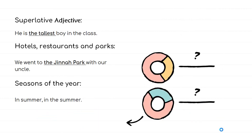When talking about the superlative degree of an adjective, we use the definite article — for example, 'He is the tallest boy in the class,' where 'tallest' is a superlative. When talking about names of hotels, restaurants, and parks, we use the definite article — for example, 'We went to the Jinnah Park with our uncle.' When talking about seasons of the year, we can use them with or without the definite article — for example, both 'in summer' and 'in the summer' are correct.